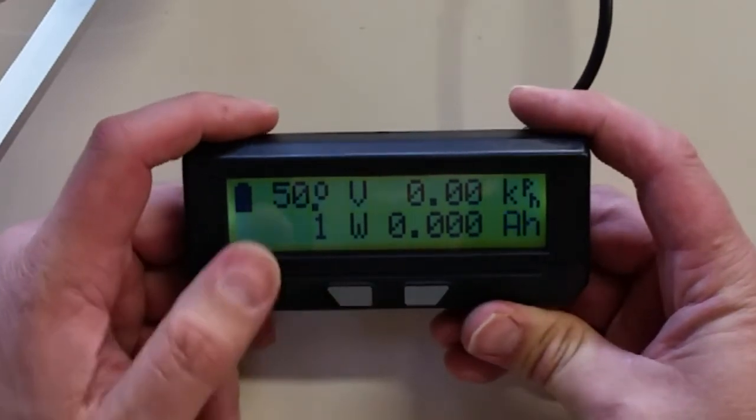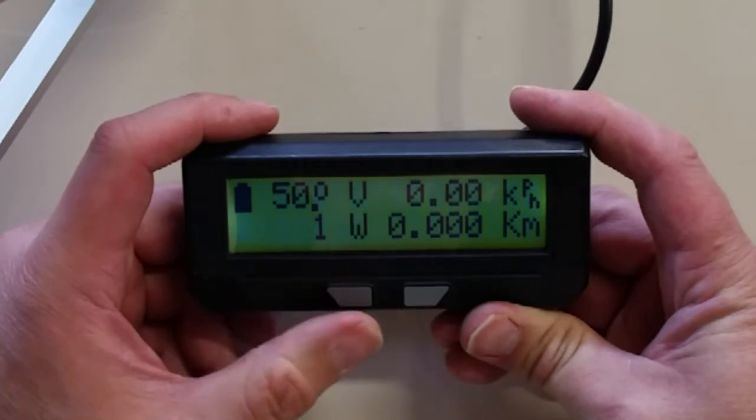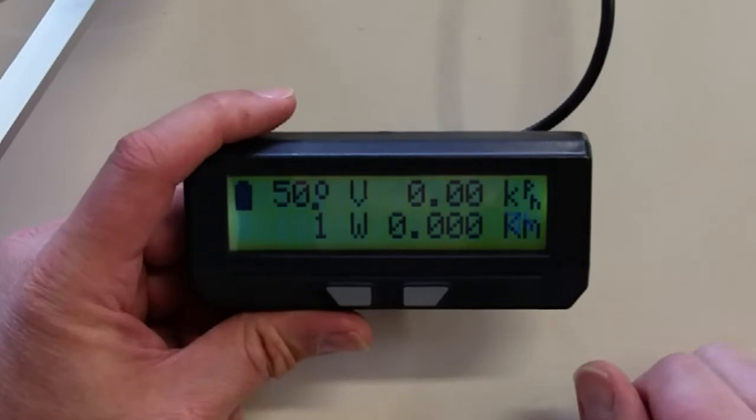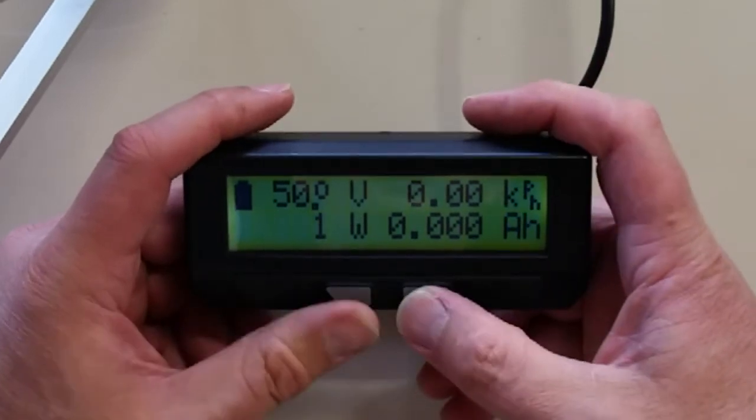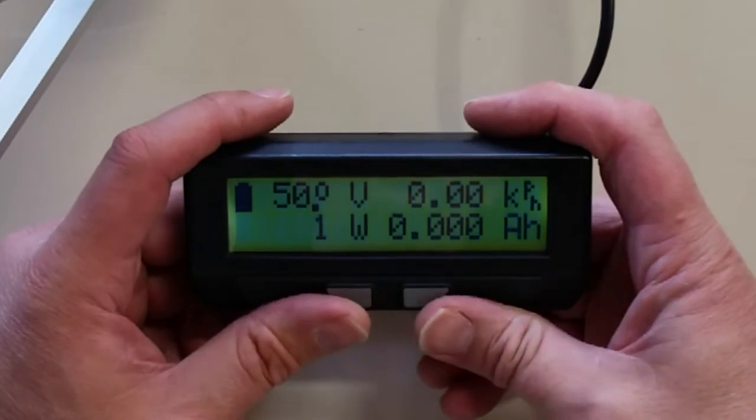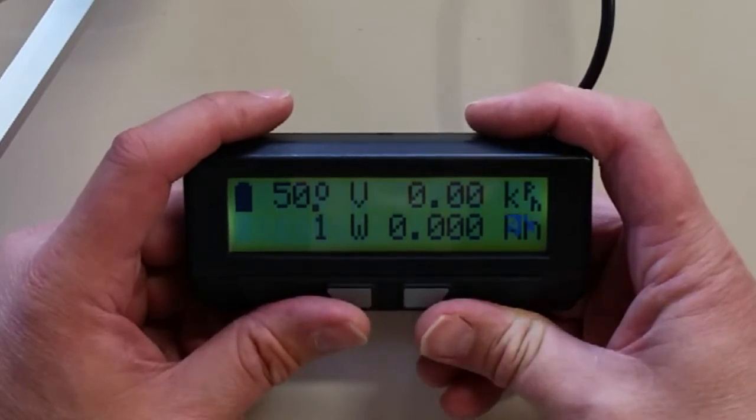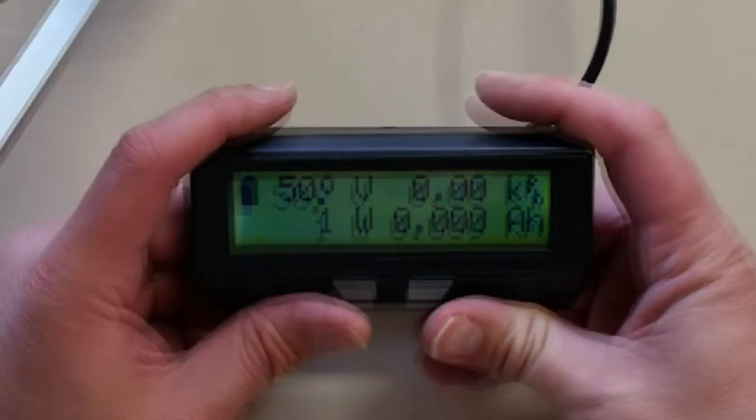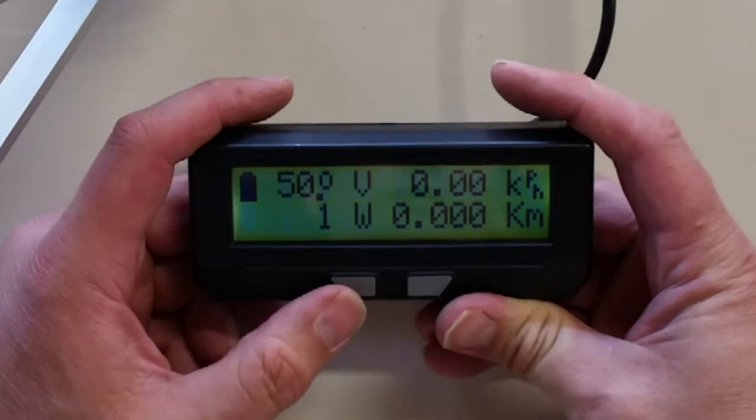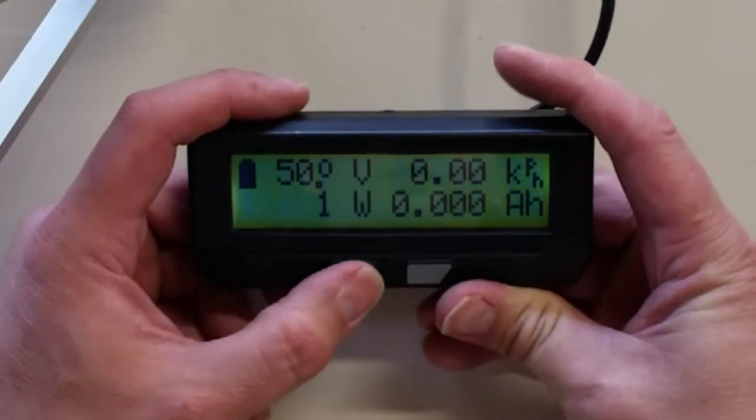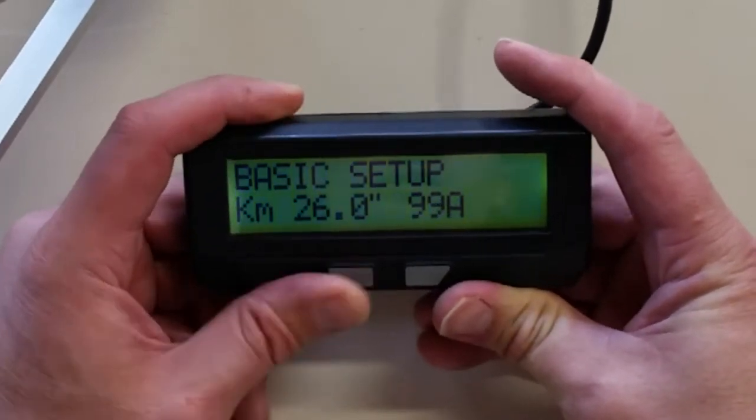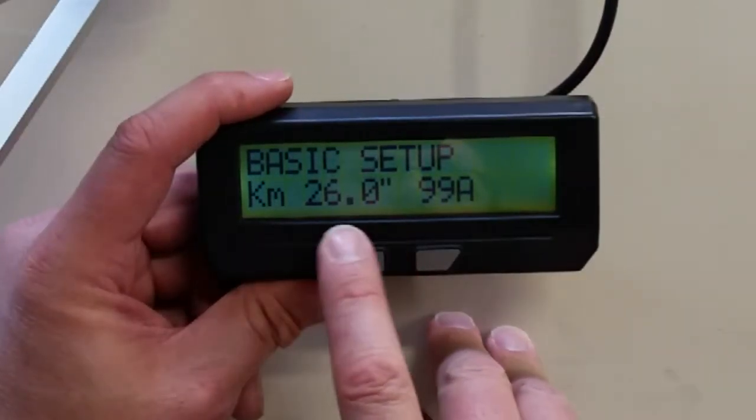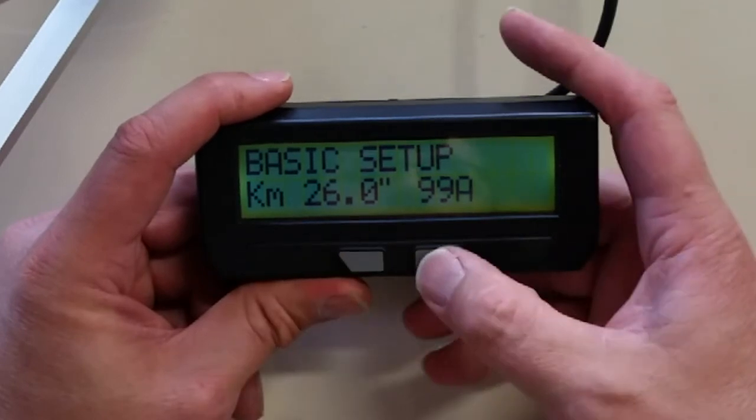Right now you can see our voltage is right at about 50.0 volts. This would be for a 48 volt battery which has a fully charged voltage of about 54.6. Right now it is at 50 volts. I am going to press and hold the left button. Now we are in the basic setup. The first thing we have is the speed and the tire size.